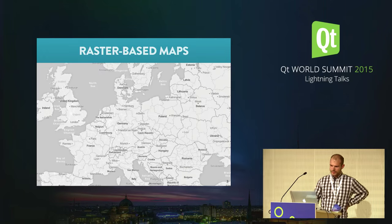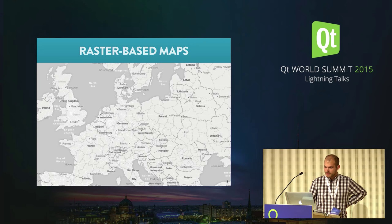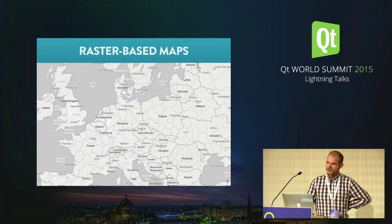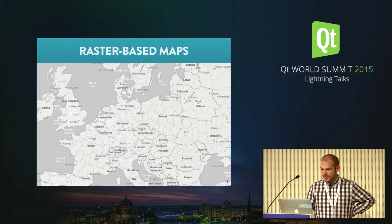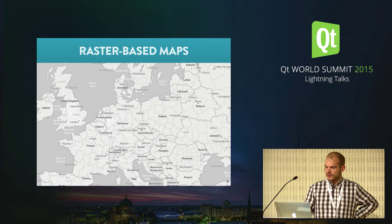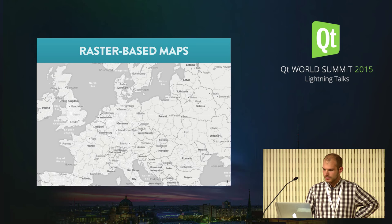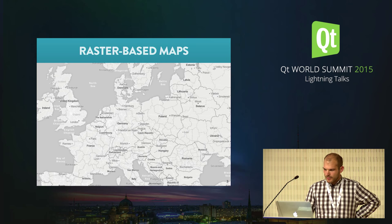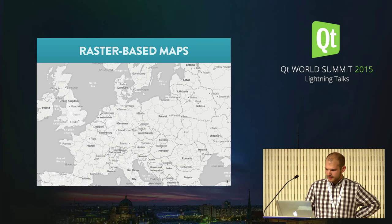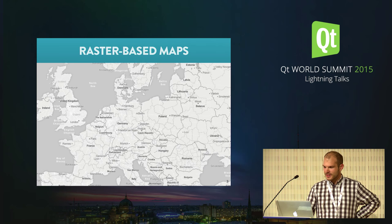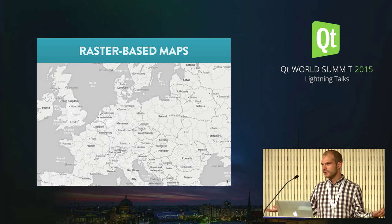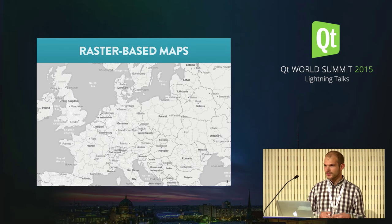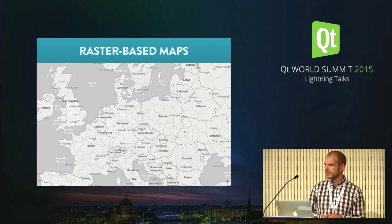Up until now, we've done a lot of raster-based maps, and this is pretty much the traditional way of making maps on the internet — like from Google Maps, or even before that MapQuest maps, if anyone remembers — as well as in apps. For example, if you use Adobe Lightroom and you open up the map view, you see that those load raster tiles from the web.